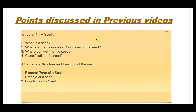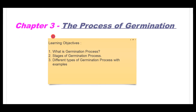To better understand the topic, I have divided it into three chapters. Here are the points discussed in my previous videos. Chapter 1: A seed — What is a seed? What are the favorable conditions of the seed? Where can we find the seed? Classification of a seed. Chapter 2: Structure and functions of the seed — external parts of the seed, embryo of the seed, and functions of the seed. Now, our third chapter: the germination process.